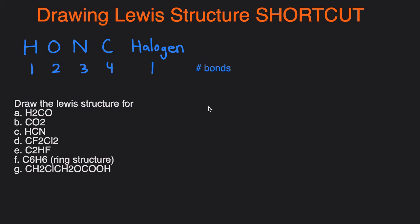Next one, HCN. We're going to put H, C, and then N. H likes to form 1 bond, nitrogen likes to form 3 bonds, so we'll put a triple bond between carbon and nitrogen, and then we just add the lone pairs to make the nitrogen have an octet. And that's the Lewis structure for HCN.